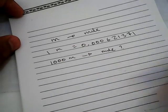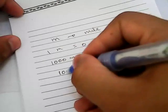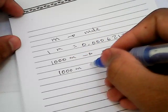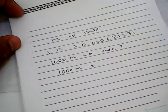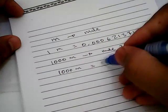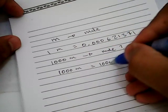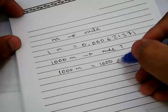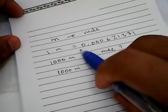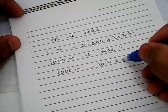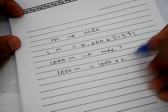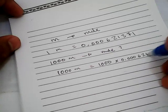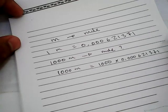First, you need to write 1000 meters, give it an equal sign, and put 1000 here. Then you need to multiply this 1000 with the conversion factor.